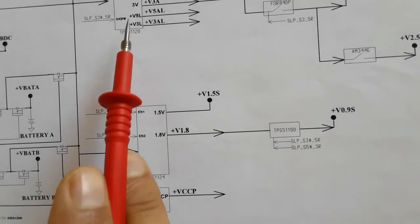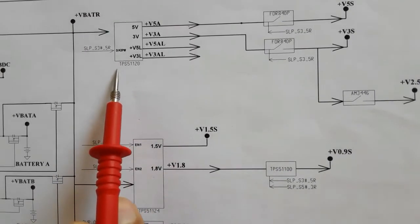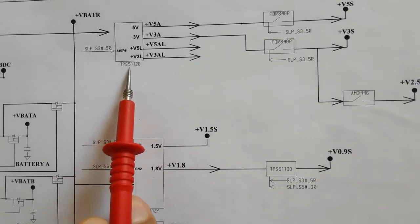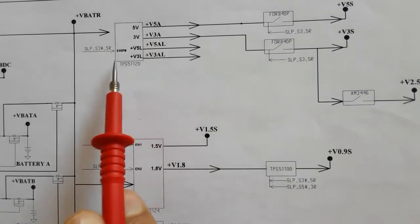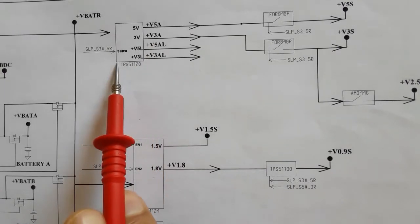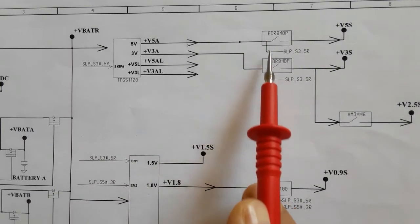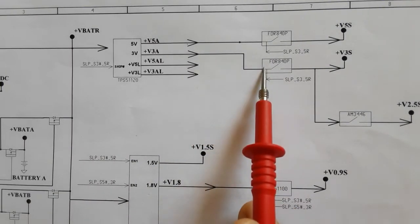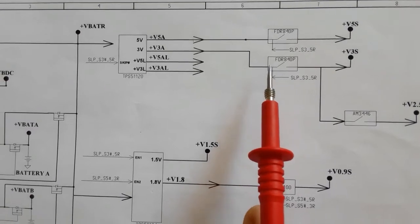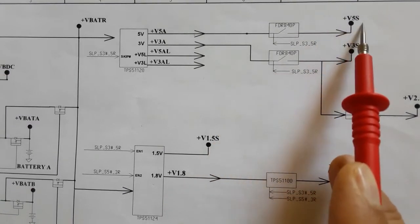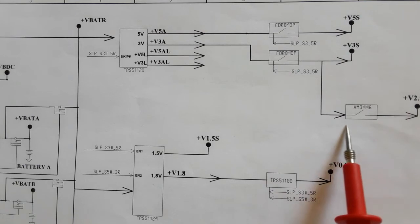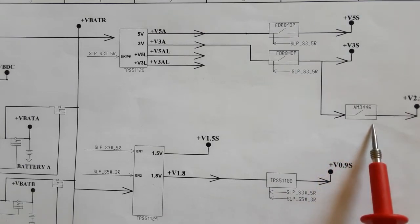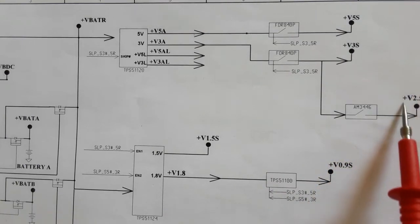Here we have the TPE51120. This is the power management IC for 3V and 5V always. Here we have the switches or MOSFETs. Through these MOSFETs we will get 5V and plus 3V. And 3V will be converted via the switch to 2.5V.